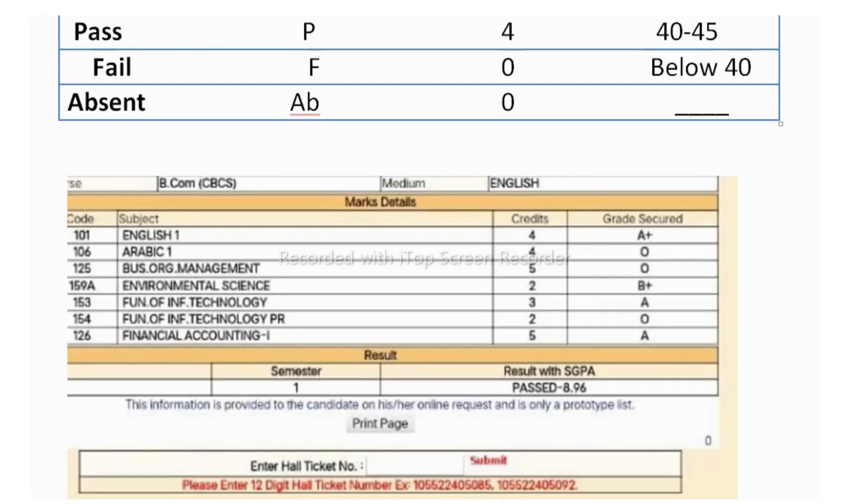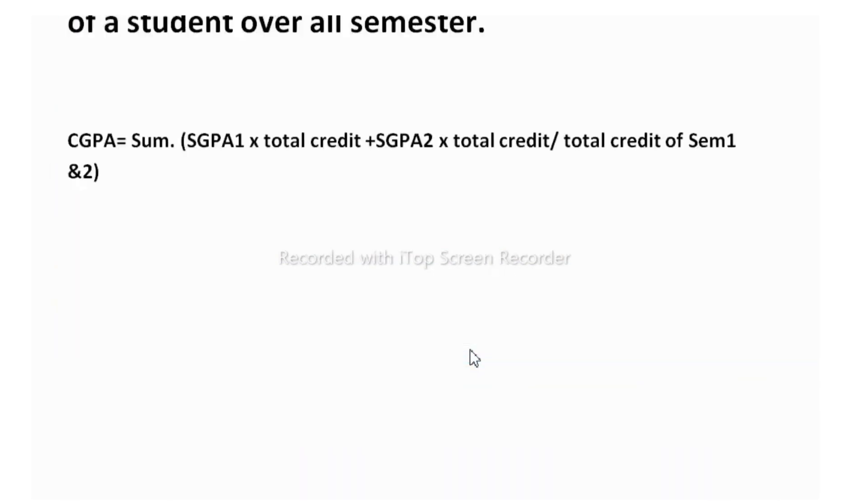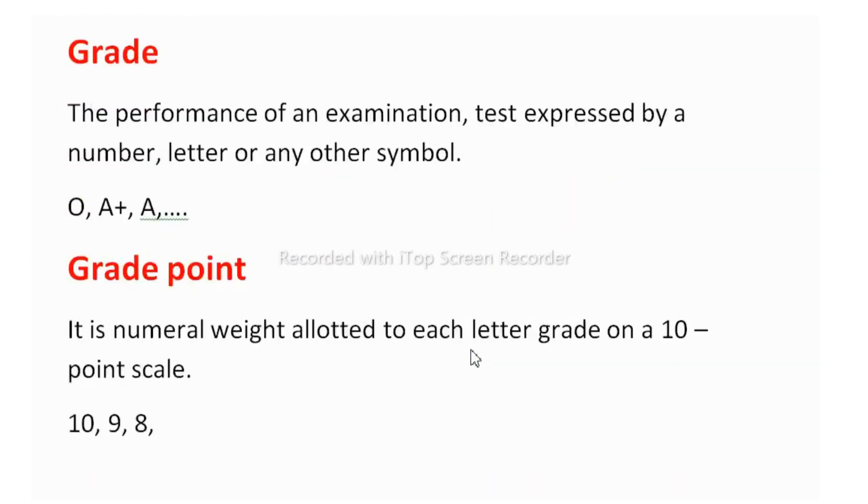So credits are nothing but the weightage to measure any subject's importance. Generally, that is called credit, that is given by the universities only. If English has 4 credit, means English should have 4 classes per week. And for practical and lab, 2 periods equal to 1 credit. But for theory, 1 credit equals to 1 period. But for practical or lab, 2 periods equals to 1 credit.